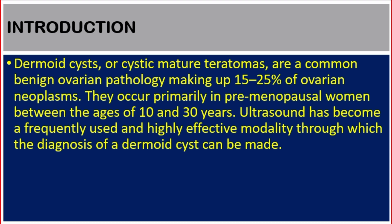Introduction. Dermoid cysts, or cystic mature teratomas, are a common benign ovarian pathology, making up 15 to 25 percent of ovarian neoplasms. They occur primarily in premenopausal women between the ages of 10 and 30 years. Ultrasound has become a frequently used and highly effective modality through which the diagnosis of a dermoid cyst can be made.